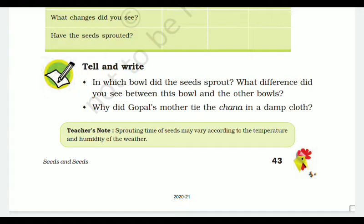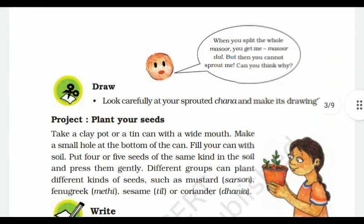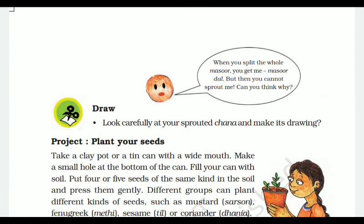When you split the whole masoor dal, you get split masoor dal, but you cannot sprout split masoor dal. The sprouting capacity of masoor is lost after it is split. Draw and look carefully at your sprouted chana and make its drawing.